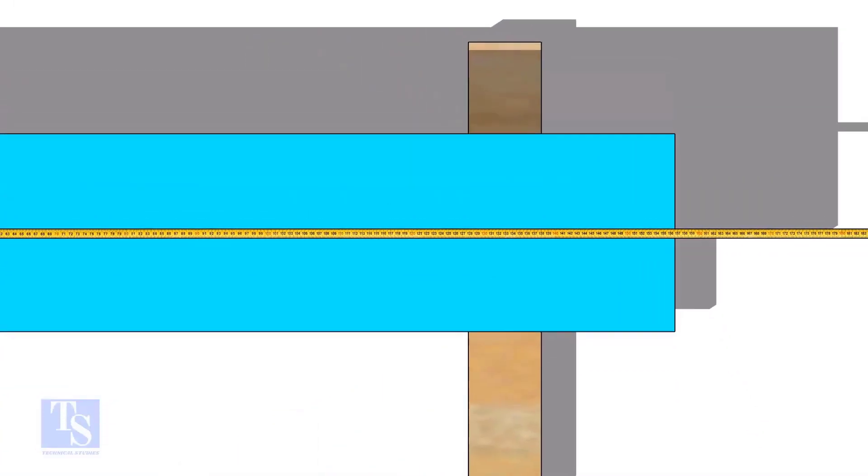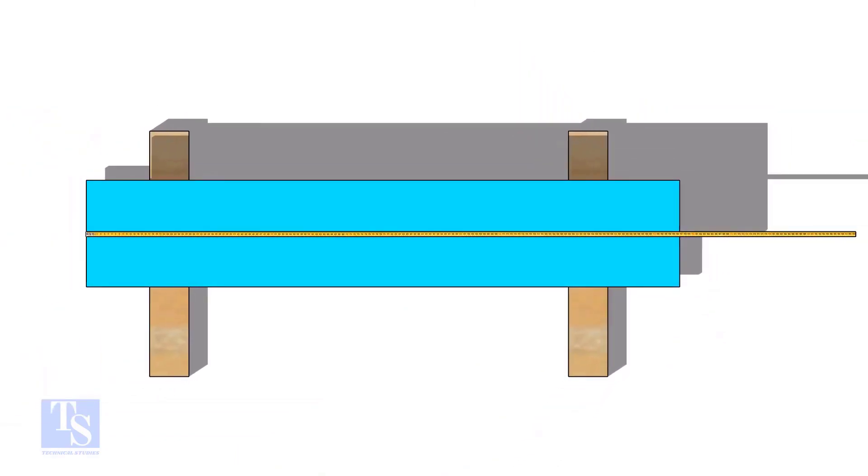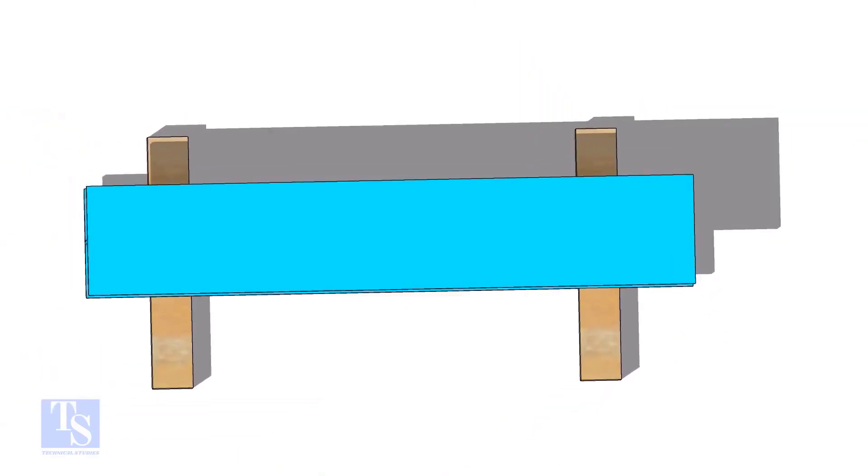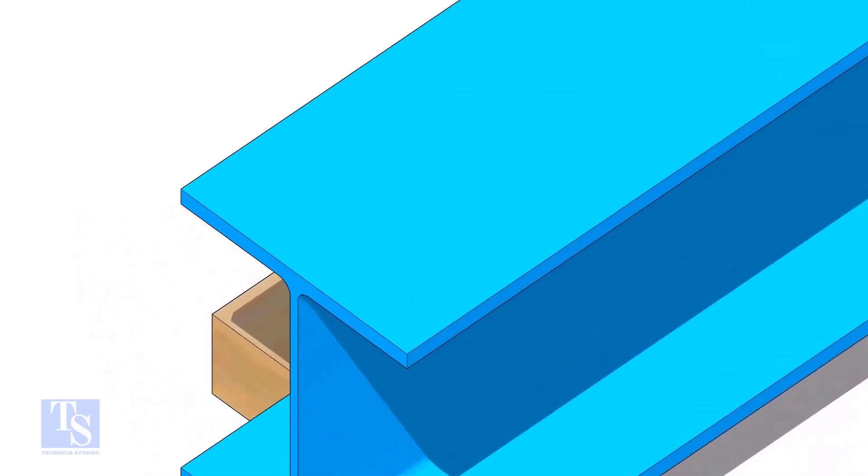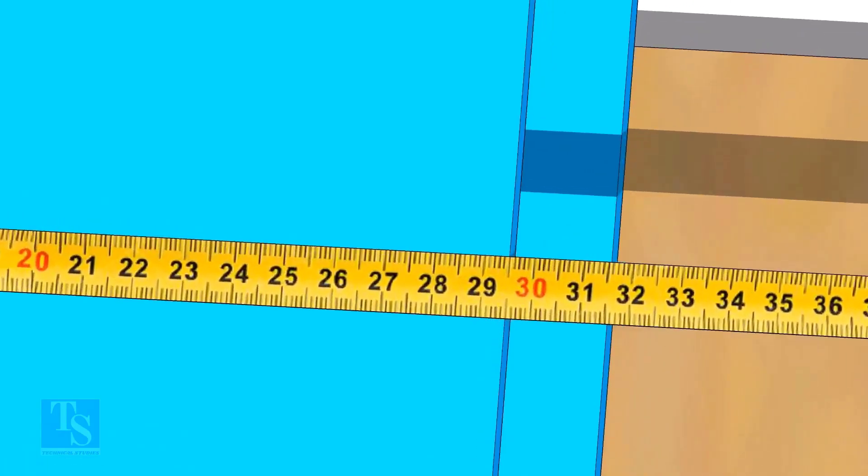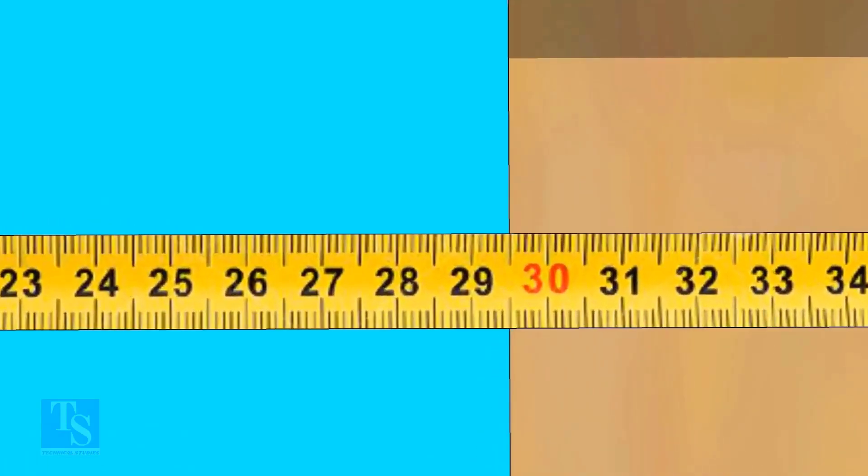Let us check the width of the beam. How much is this? The width is 5 millimeters less than 300, which is equal to 295 millimeters.